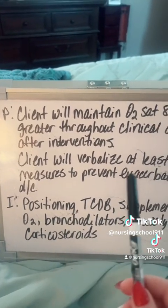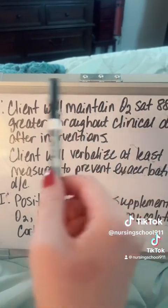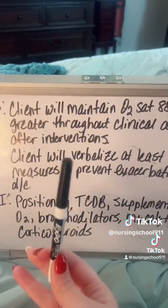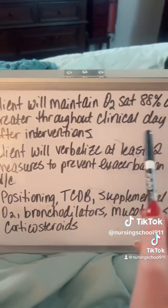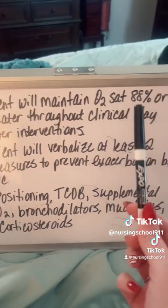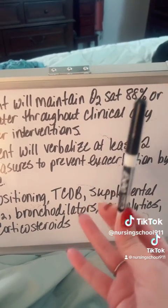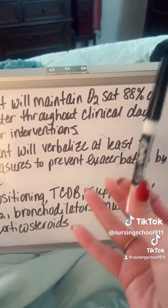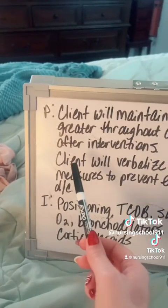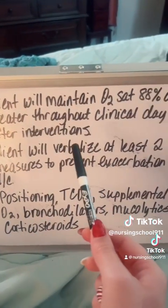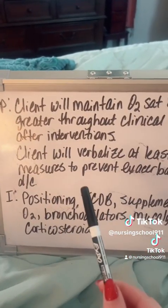For planning, here are the short-term and long-term goals. The short-term goal — remember, it has to be realistic and measurable — is that the client will maintain an O2 sat of 88% or greater throughout the clinical day after interventions. An O2 sat of 88% is actually realistic for a COPD patient; we don't want them at 96–98% because their drive to breathe is hypoxemia. The long-term goal is that the client will verbalize at least two measures to prevent exacerbation by the time of discharge.